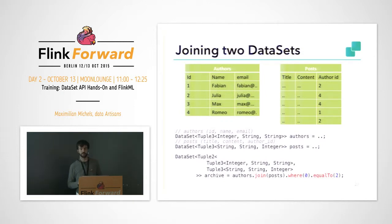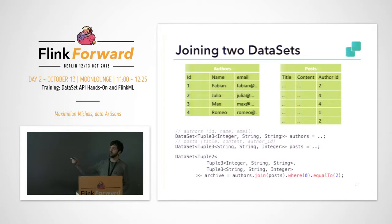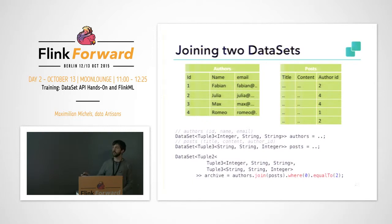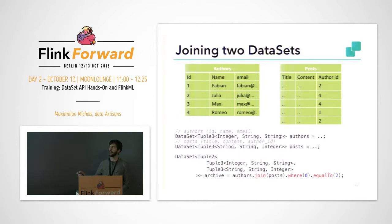There's a join operator which lets you obviously join two datasets. For a typical web application, you might have an authors table and a posts table. In a database you would connect these two tables by assigning an ID to an author, and also for every post published on your blog, assign the author ID so you know which post is by which author. You can see here that Fabian has a post, Romy has two posts, and Max actually doesn't have a post.